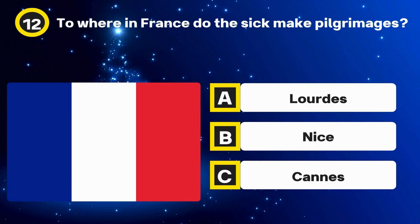Question 32. Who piloted the first flight across the English Channel? Options: Amelia Earhart, Charles Lindbergh. The answer: Louis Bleriot.